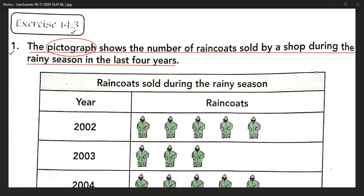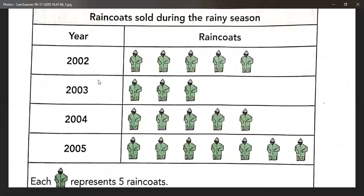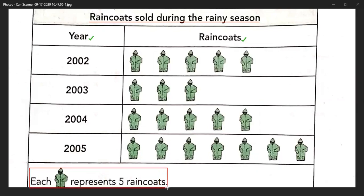The pictograph given below shows the number of raincoats sold by Aesop during the rainy season in the last four years. There is a year column and a raincoats column. We need to keep in mind that each picture of a raincoat represents five raincoats.